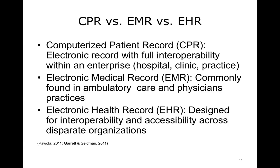So what exactly is the difference between a CPR, an EMR, and an EHR? Generally, when we refer to a computerized patient record, or CPR, we are referring to a record system designed for use in an acute care setting, such as a hospital, while we generally think of electronic medical records, or EMRs, as simplified versions of CPRs designed for use in ambulatory care and physician's practices. EMRs are designed to provide patient data recording, tracking, and quality assurance functions within a practice. Both CPRs and EMRs are typically designed to provide interoperability only within the host enterprise, offering limited, if any real, interoperability beyond the institution.